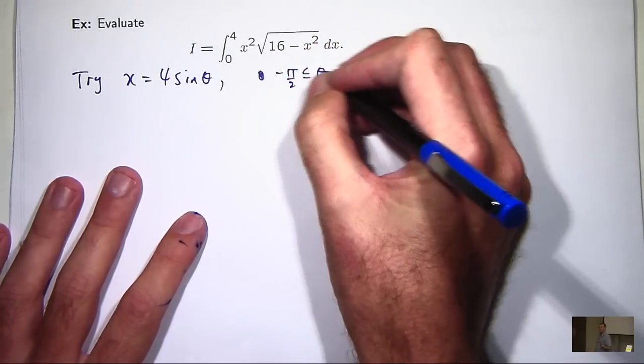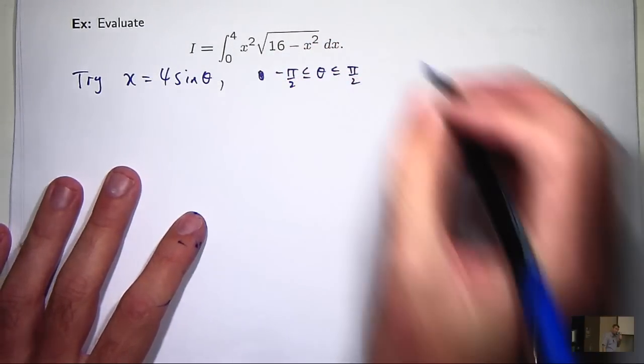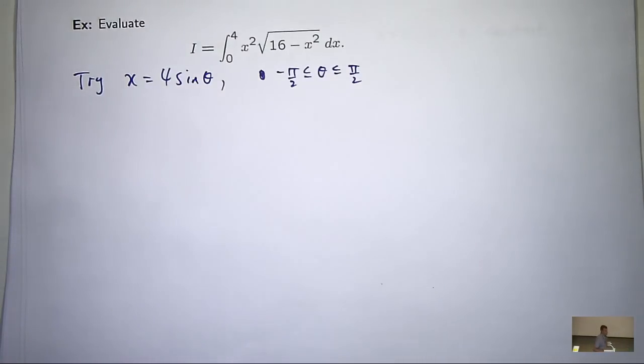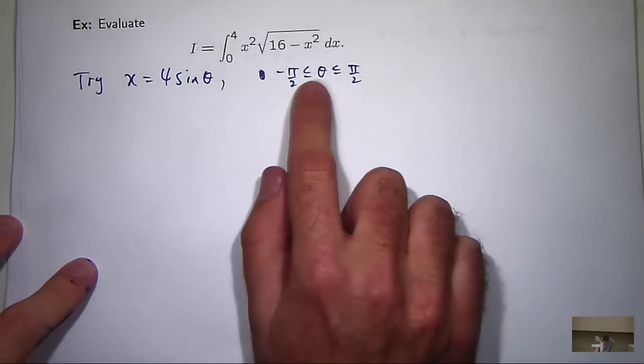you may have not been told all the ins and outs of it. So for example, the theta here is between minus pi on 2 and pi on 2. Can anyone suggest why that is? Yes, up the back. Excellent, yes.